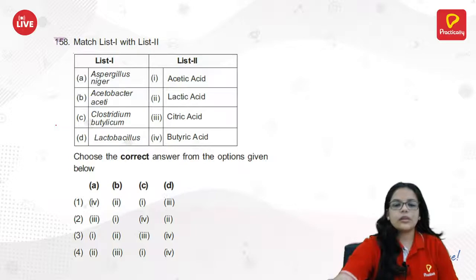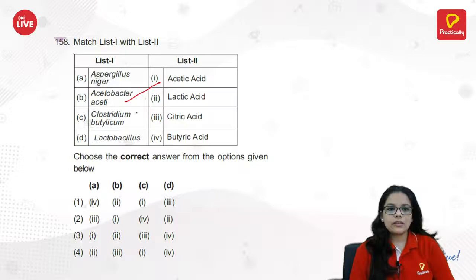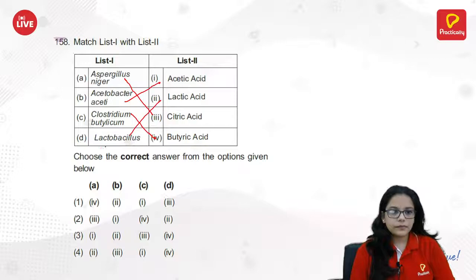By-products: Aspergillus niger — this is also repeated from previous papers. Acetic acid by Acetobacter. Clostridium botulinum — citric acid. Lactobacillus — lactic acid. Aspergillus niger — citric acid. The answer is A3, B1 — second option.